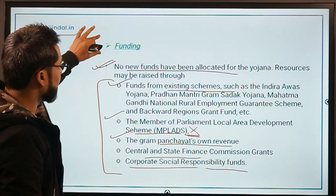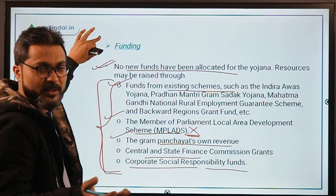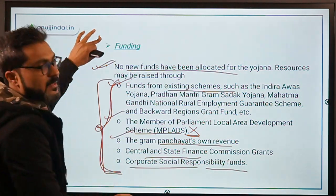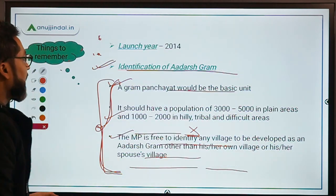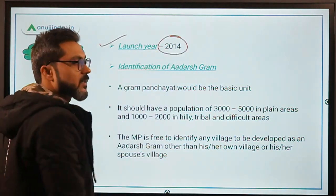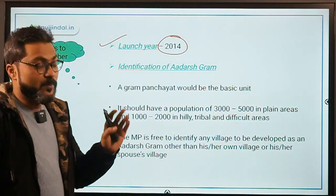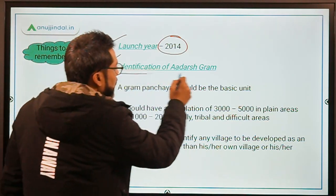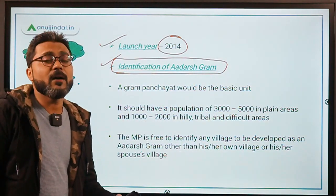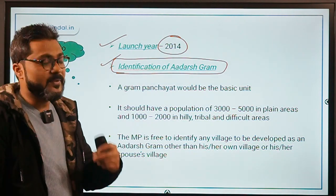Just remember that there are no new funds for this scheme — those specific sources don't need to be memorized, but can be useful for essay-type questions. Now, the things you must remember: the scheme was launched in the year 2014. That is very important. Next, how can an Adarsh Gram be identified? What are the criteria for a village to be considered as an Adarsh Gram?